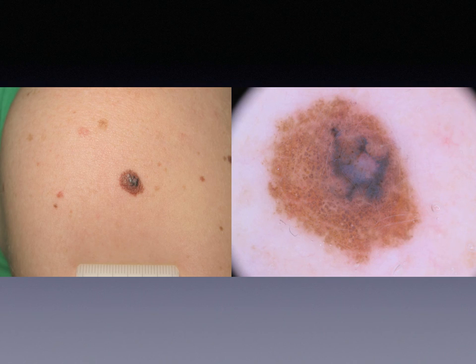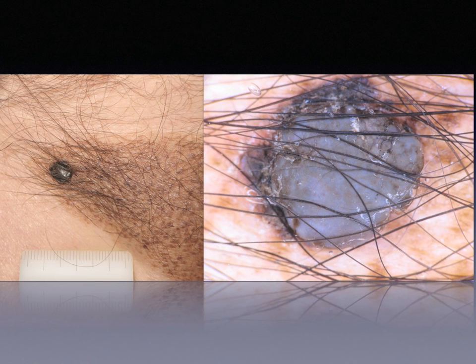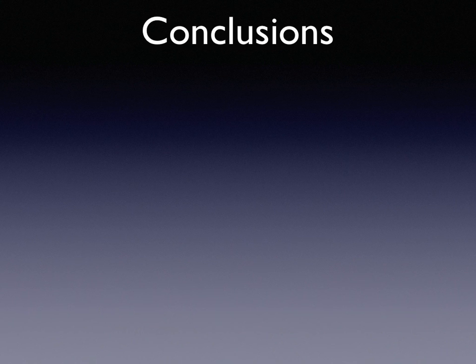Regarding melanomas arising on congenital nevi, there is no study evaluating specifically the dermoscopic features of melanomas arising on congenital nevi. Based on our experience, in many cases we observe the presence of a blue component in dermoscopy. Here is one case of in situ melanoma arising on a congenital nevus in a 17-year-old girl, and here a case of a nodular melanoma characterized by a blue hue arising on a medium-sized congenital nevus in a 65-year-old man.